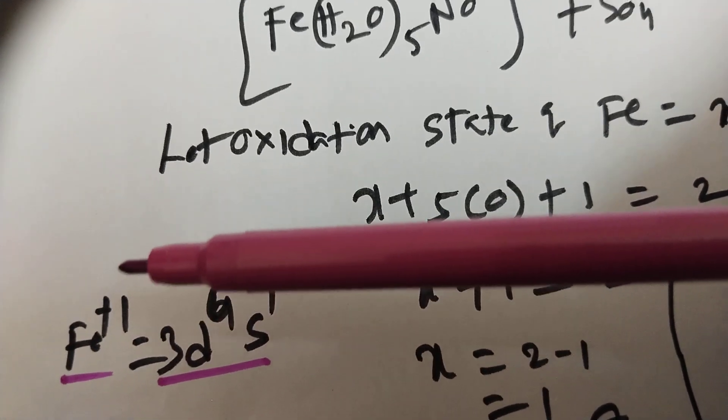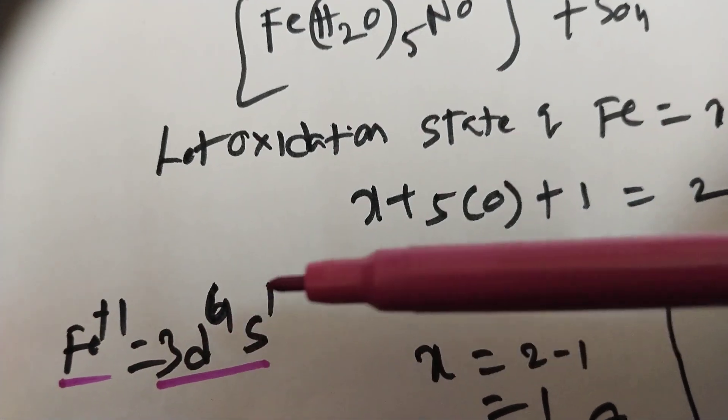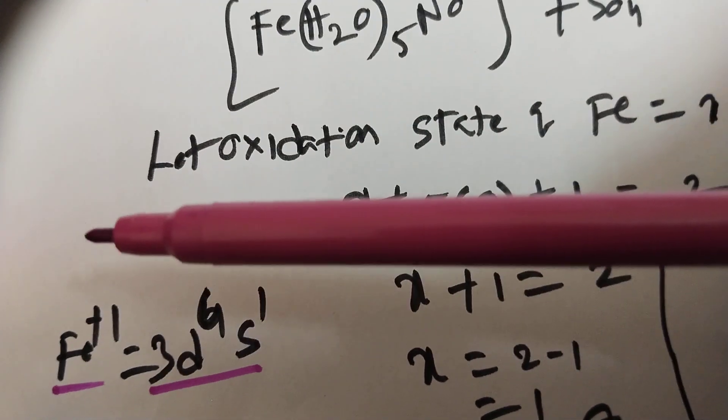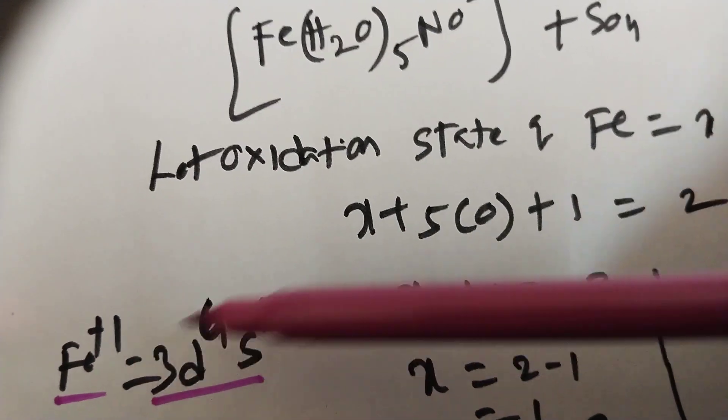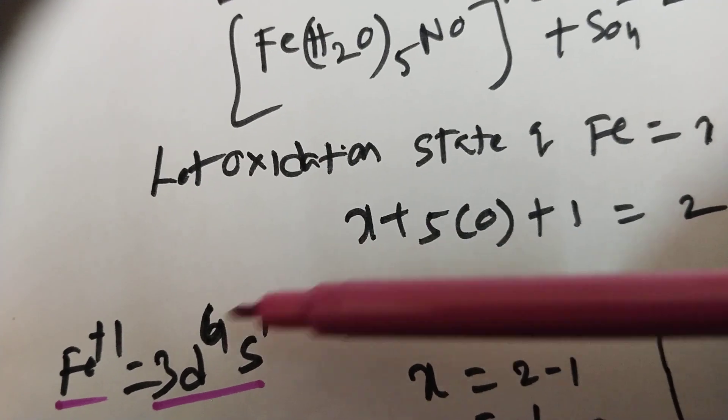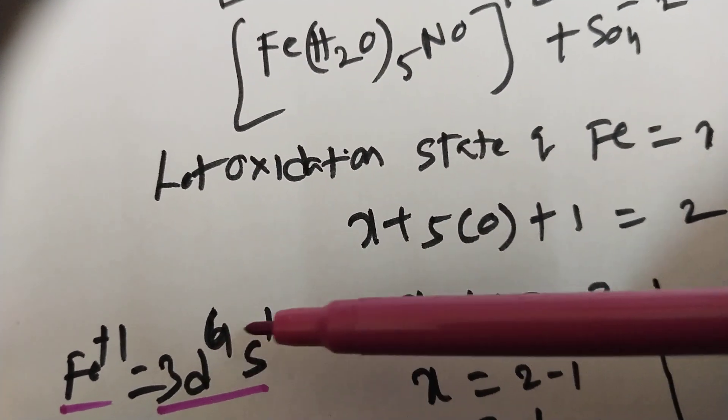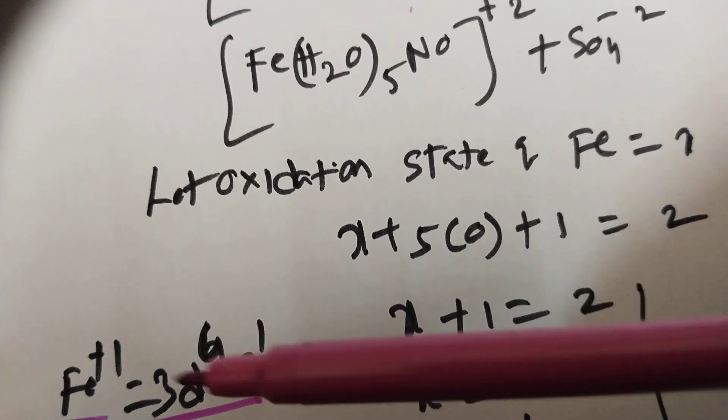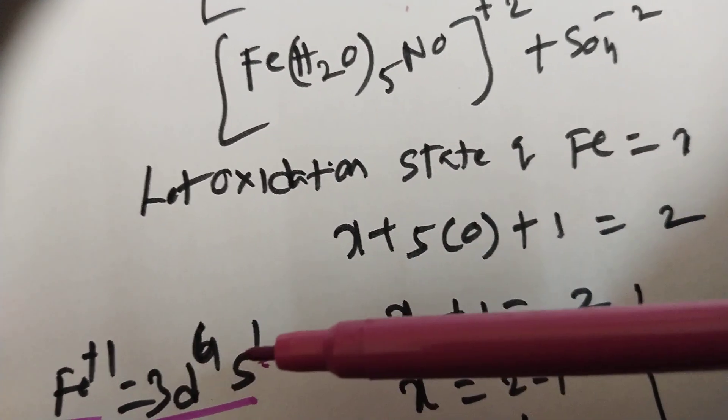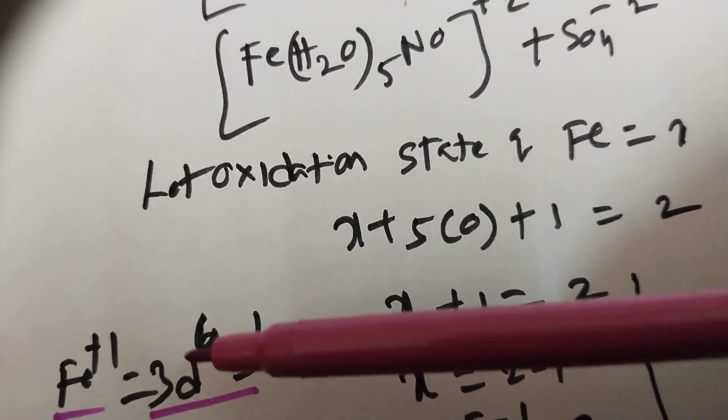Fe atomic number 26, configuration 3d6 4s2 actually. Now I want Fe plus 1, remove one electron from s orbital. Now I can write 3d6 4s1. 3d6 4s2 converted to 3d6 4s1 in Fe plus 1.